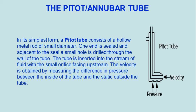In its simplest form, a pitot tube consists of a hollow metal rod of small diameter. One end is sealed, and adjacent to the seal, a small hole is drilled through the wall of the tube. The tube is inserted into the stream of fluid with the small orifice facing upstream. The velocity is obtained by measuring the difference in pressure between the inside of the tube and the static pressure outside the tube.